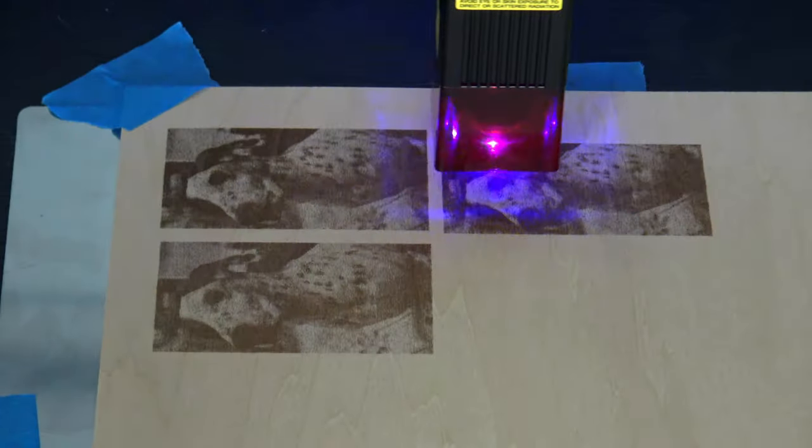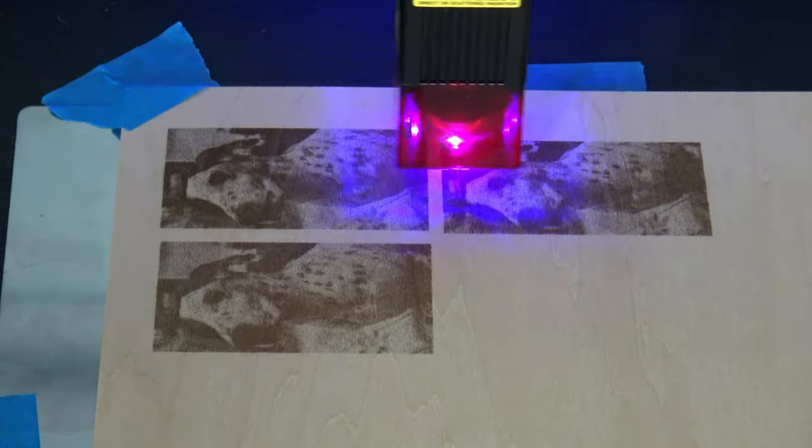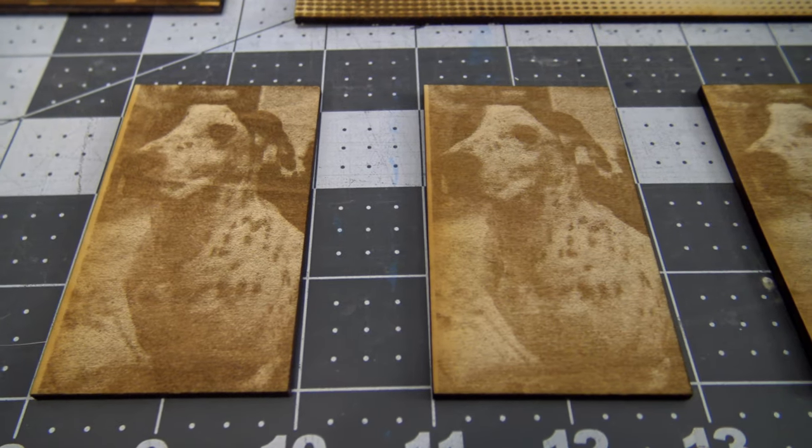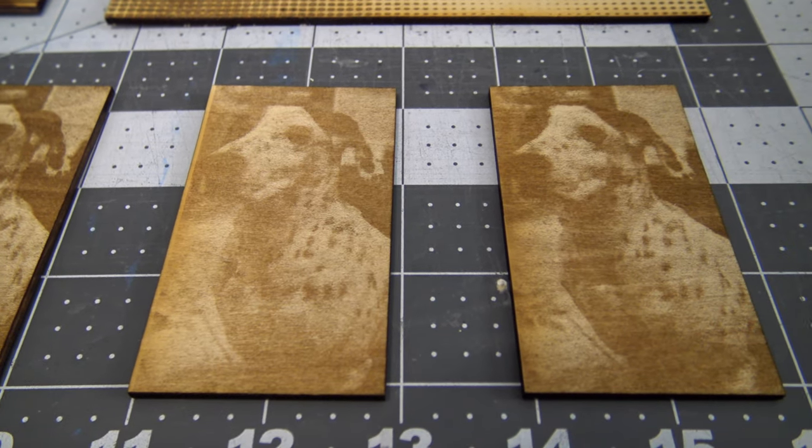Engraving also works well. I engraved a handful of photos of my dog Jack, varying the speed and max power settings. I finalized with a speed of 8,000 millimeters a minute, with a max power of 80%. That seemed to be a good balance of speed and contrast.